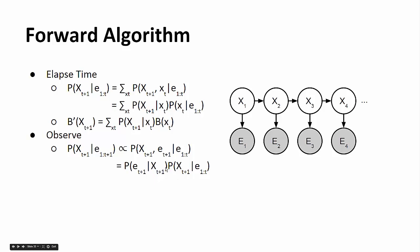Simplifying: the first quantity — p of e at time t plus 1 given x at time t plus 1 — is just the emission table p of e given x from our HMM formulation. The second quantity — p of x at time t plus 1 given e1 through t — is exactly b prime of x sub t plus 1 from the elapsed time step. So the full belief update is: b of x at time t plus 1 is proportional to the emission probability p of e sub t plus 1 given x sub t plus 1, times b prime of x sub t plus 1.